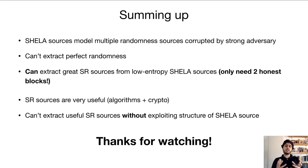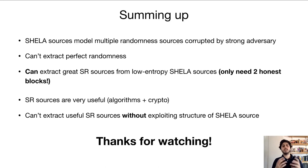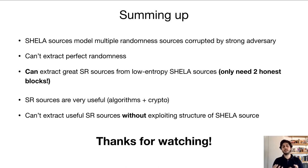Okay, so we've reached the end of the talk. Let me sum up what we saw. First, SHELA sources are a natural model for an adversarial multisource setting, and although we cannot extract perfect randomness from SHELA sources, we can extract SoMa random sources with great parameters, even when we have a SHELA source with very bad parameters like only two honest blocks. We also saw that SoMa random sources are extremely useful for algorithms and for cryptography, and we saw that we really need to exploit the structure of SHELA sources to extract useful SoMa random sources. That's all from me — thanks for watching.